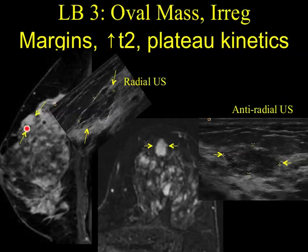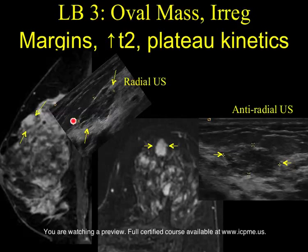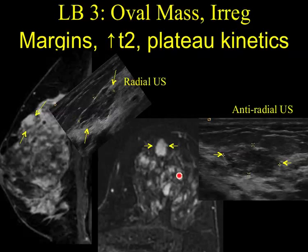Here's left breast lesion 3 at 12 o'clock. We see this oval-type lesion with a funny little notch in it, marginated by superficial fat. I've oriented the radial ultrasound to be more in line with the sagittal MRI. You can see that oval mass with the little notch corresponding to the notch on MRI, marginated superficially by fat. On the anti-radial ultrasound, because of gravity, this lesion is a little flatter than it was on the prone pendant MRI, but again very similar shape and indistinct margin features.